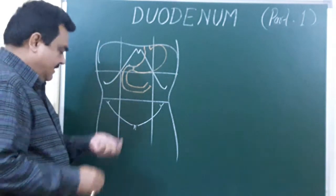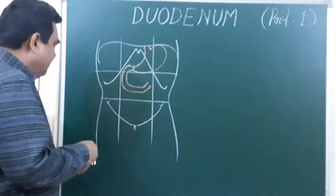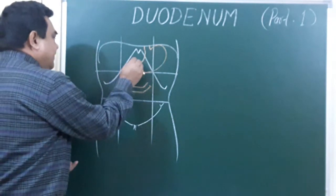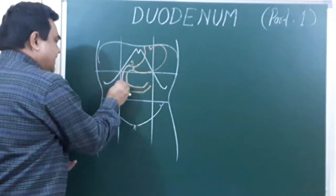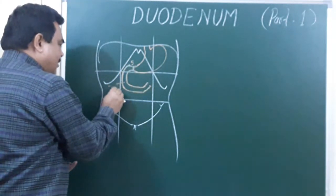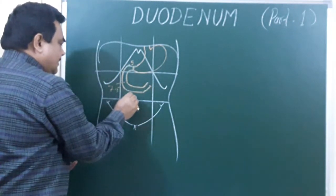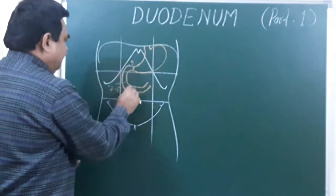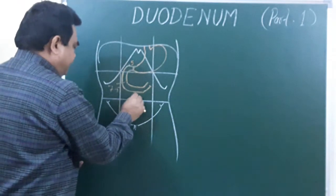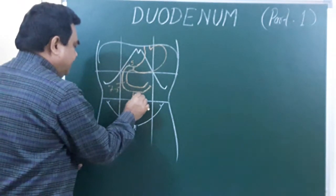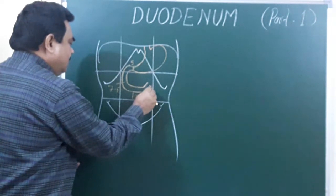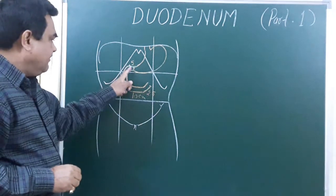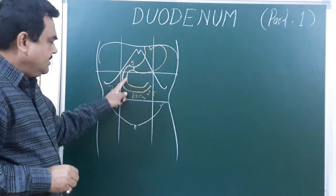The length of each part: the first part is about 5 centimeters, the second part is 7.5 centimeters, the third part is 10 centimeters, and the fourth part is 2.5 centimeters. In inches, these are approximately 2 inches, 3 inches, 4 inches, and 1 inch respectively.